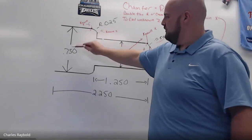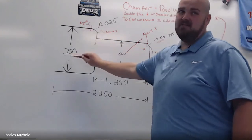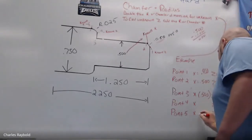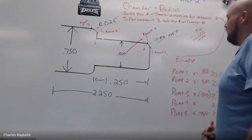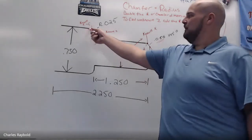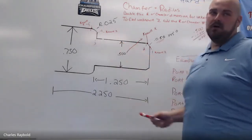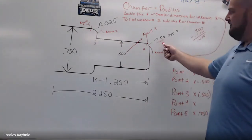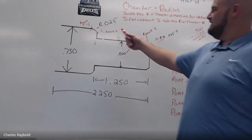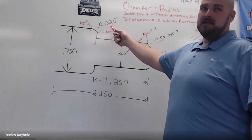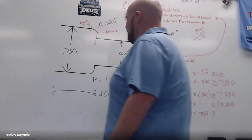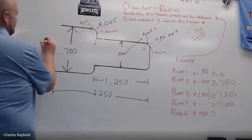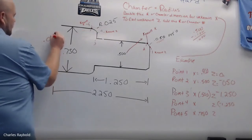What's that diameter? It's point seven five zero. So I know my X is going to be point seven five zero, where it ends at point number five. So how do I find point number four? I'm going to do the same thing I did to figure out my chamfer. I'm going to take this number and double it — making that point zero five zero.